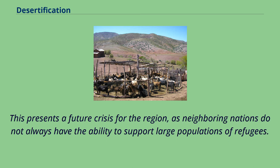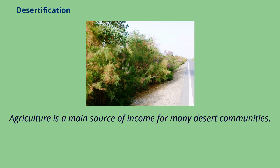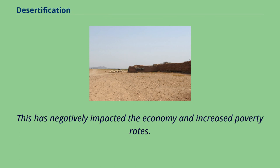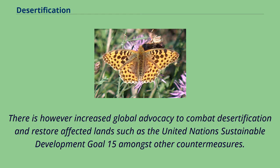This presents a future crisis for the region, as neighboring nations do not always have the ability to support large populations of refugees. Agriculture is a main source of income for many desert communities, but increased desertification has degraded the land to the extent where people can no longer productively farm and make a profit, negatively impacting the economy and increasing poverty rates. There is however increased global advocacy to combat desertification and restore affected lands, such as the United Nations Sustainable Development Goal 15, amongst other countermeasures.